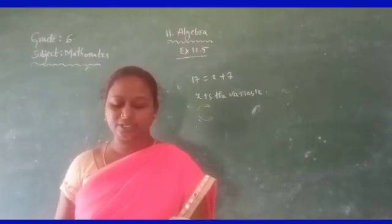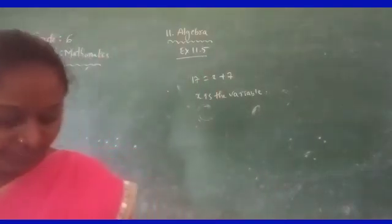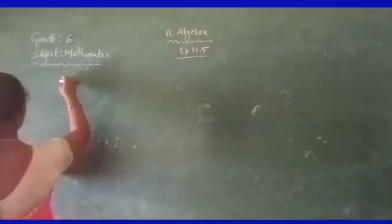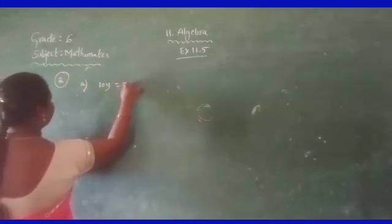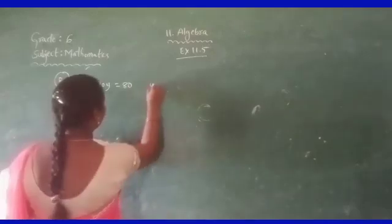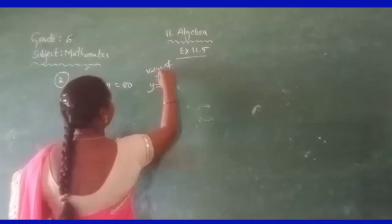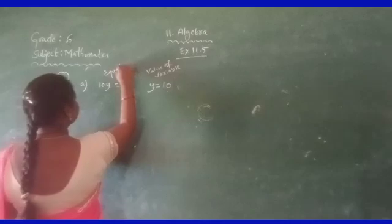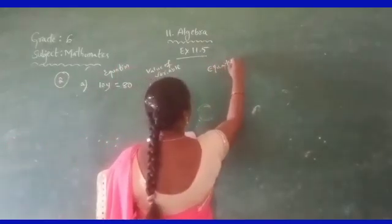Second problem: complete the entries in the third column of the table. The table has serial number, equation, and value of variable. For row a1: equation is 10y is equal to 8, and the value of variable given is y equals 10. We need to check if this equation is satisfied.